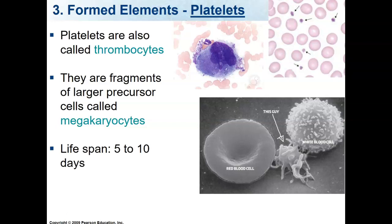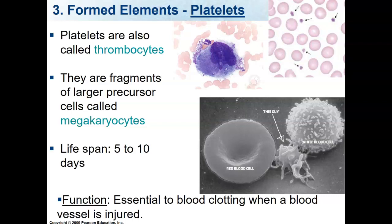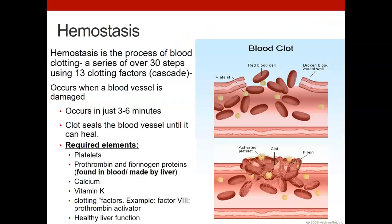The lifespan of a platelet is about 5 to 10 days before it's destroyed by the liver. The function of platelets is that they are essential to blood clotting, and they jump into action when a blood vessel is injured. Hemostasis is another name for blood clotting. In the blood clotting process, there are over 30 steps using 13 clotting factors. This is called a cascade because one thing happens and then the other, and everything depends on the one before it.